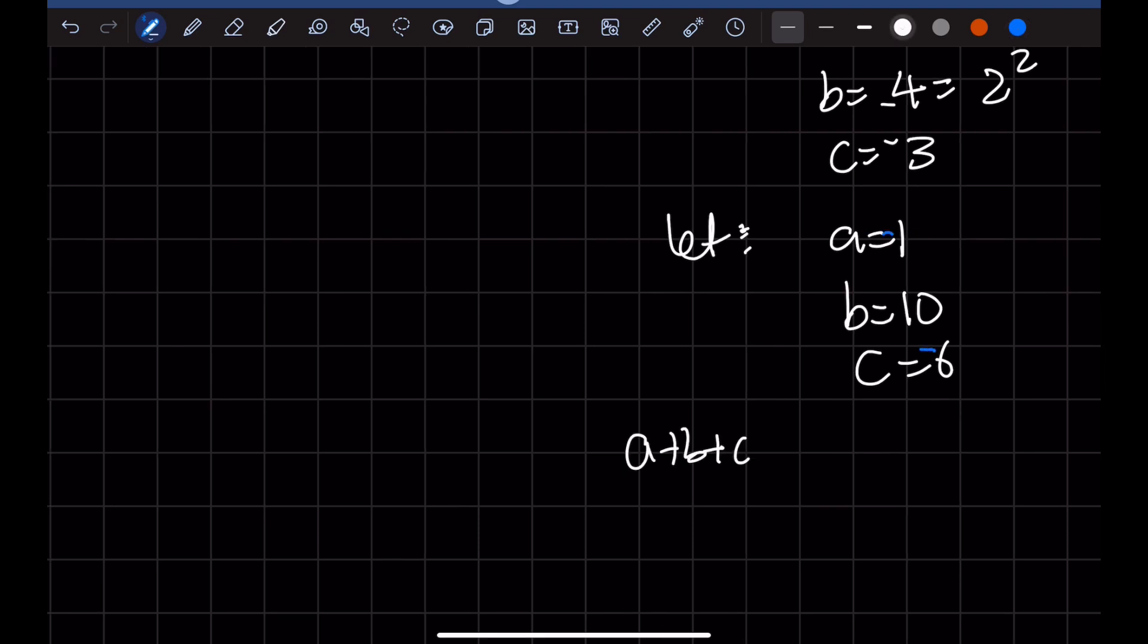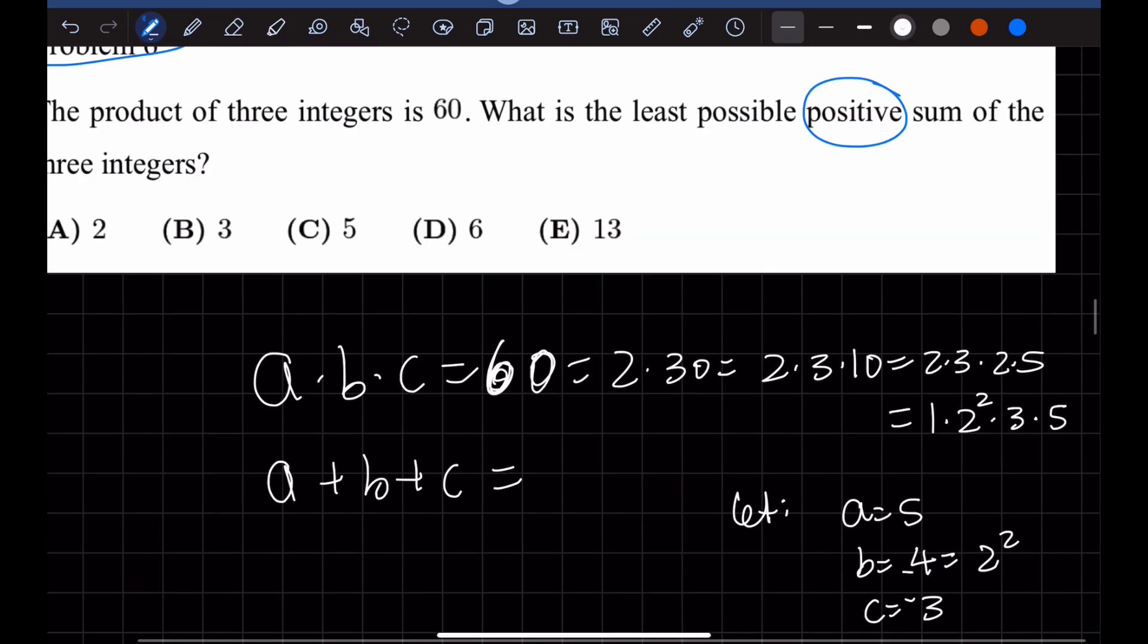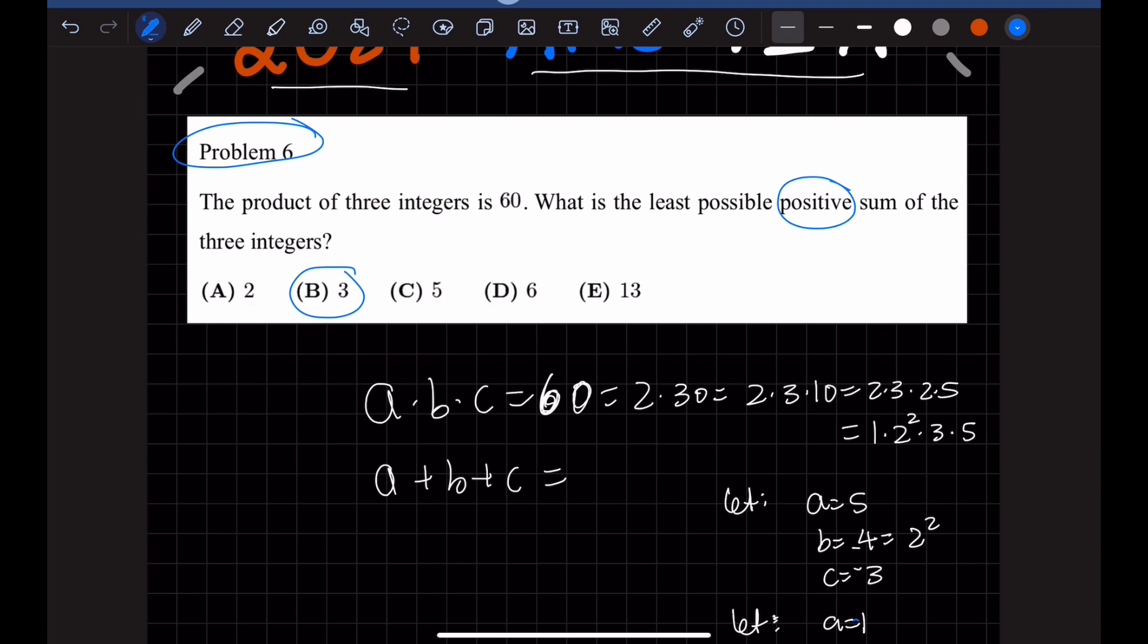That way, A plus B plus C equals negative 1 plus 10 minus 6. This would be 3. So that is pretty small right away. So it's either answer A or B.